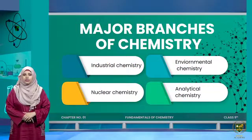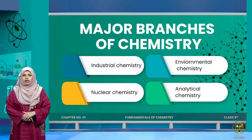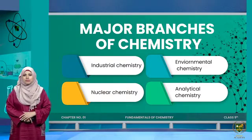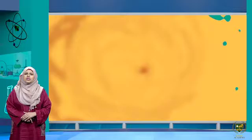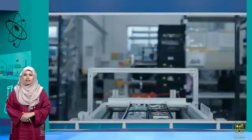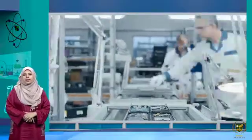In this lecture we are going to study the remaining four branches: industrial chemistry, nuclear chemistry, environmental chemistry, and analytical chemistry. So let's start with industrial chemistry first.